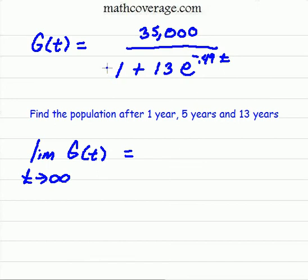So we have this model: g of t equals 35,000 over 1 plus 13 times e raised to the negative 0.49t. And we're asked a question here - it says find the population after 1 year, 5 years, and 13 years.